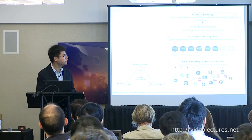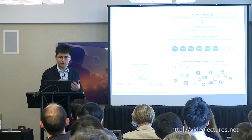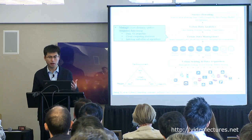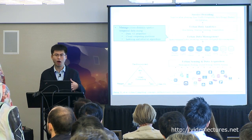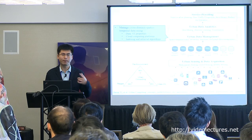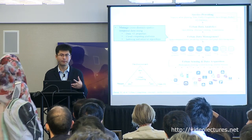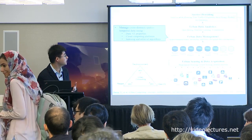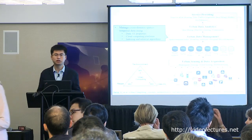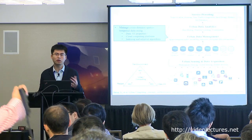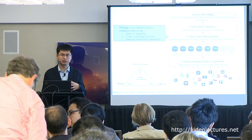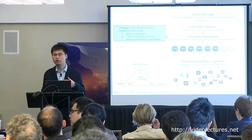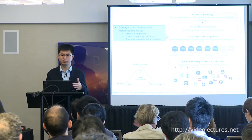Let's go to the urban data management layer. We are looking at three problems: one is data, second is the platform, and third is indexing and retrieval algorithms. In order to have a very efficient urban data management system, you have to address all three.